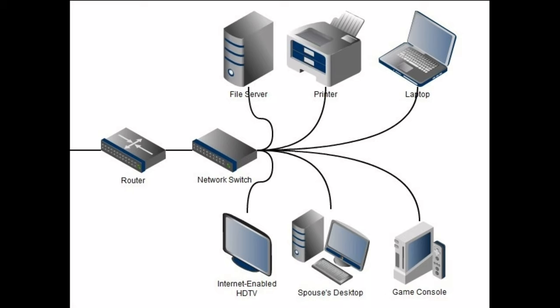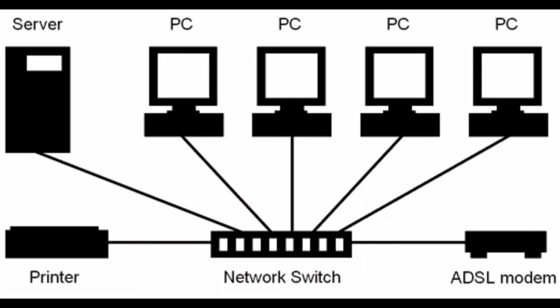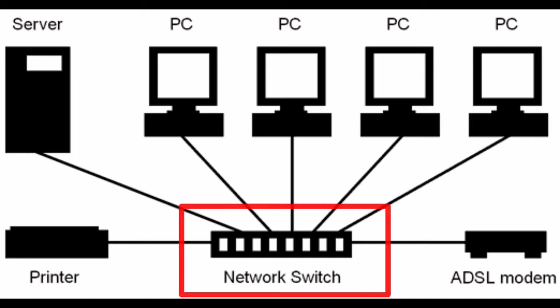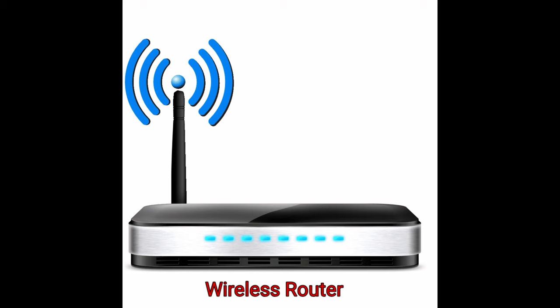The answer involves that device we mentioned earlier — the switch. A switch sends traffic through your network to the places it needs to go, making it the most important part of a networking setup. Every home router has a switch with four ports built right into it. You can also use a wireless router that uses radio signals to do the same thing, and you can use the ports to connect your computer with a LAN cable.